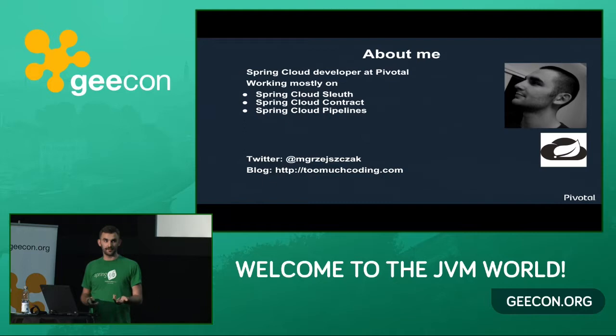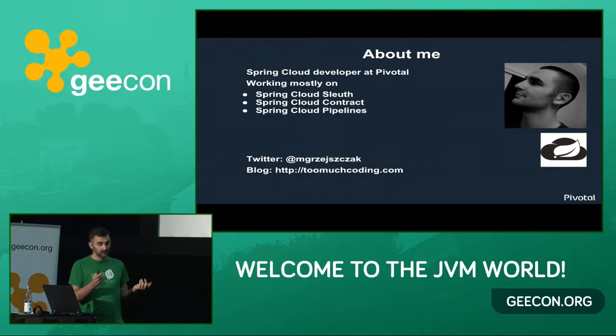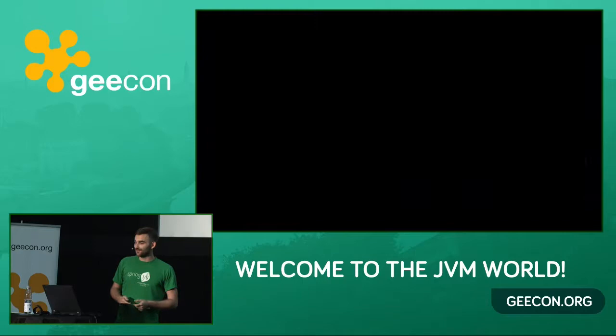Sleuth is for distributed tracing. Contracts — we're going to talk about this today. And Pipelines is about continuous integration, delivery, and deployment. My Twitter handle is mgrzeiszczak — sorry for the foreigners. If I were you, I would pick four letters at least from the beginning and that's it. Most likely you're going to find me. Or go to my blog, toomuchcoding.com, where you can find my Twitter handle.